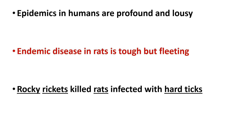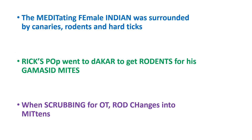For Rocky Mountain Spotted Fever: 'Rocky ricketts killed rats infected with hard ticks' — caused by Rickettsia rickettsii, reservoir is rats, vector is hard ticks. For Mediterranean fever and Indian tick typhus: 'The meditating female Indian was surrounded by canneries, rodents and hard ticks' — caused by Rickettsia conorii, reservoir is rodents, vector is hard tick. For rickettsial pox: 'Rick's pop went to Dakar to get rodents for his gammacid mites' — caused by Rickettsia akari, reservoir is rodents, vector is gammacid mites.